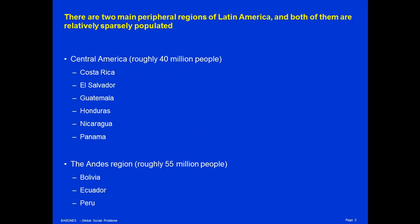There are two main peripheral regions of Latin America, and both of them are relatively sparsely populated. One is Central America with roughly 40 million people. The six Spanish-speaking countries of Central America are Costa Rica, El Salvador, Guatemala, Honduras, Nicaragua, and Panama. The second region is the Andes region of South America, roughly 55 million people in Bolivia, Ecuador, and Peru.